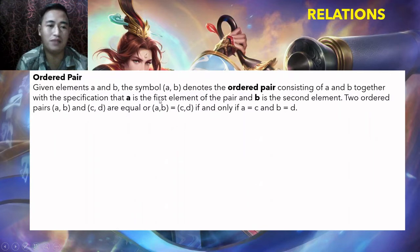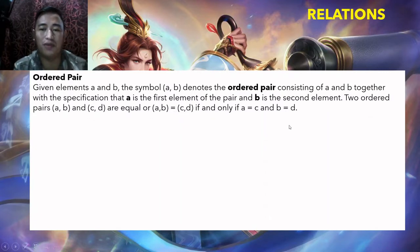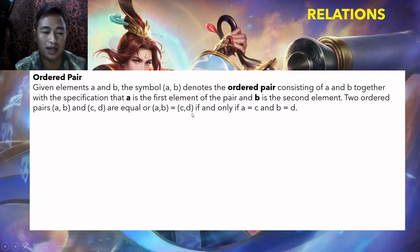Two ordered pairs (A, B) and (C, D) are equal — written (A, B) = (C, D) — if and only if A equals C and B equals D. So the first elements must be equal, and the second elements must also be equal.